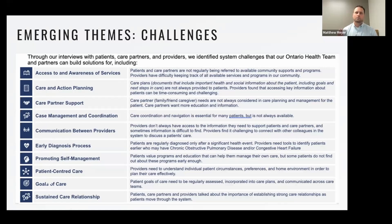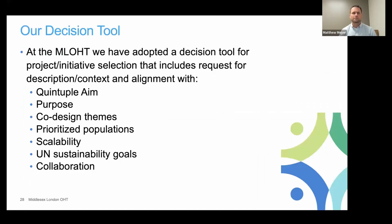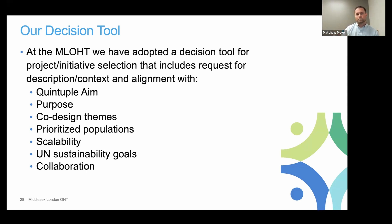What came out of that experience-based co-design are ten areas of focus, which we consistently come back to as part of our decision-making process when considering projects. It's not just about the data — we always come back to how each project is addressing one of these themes. We do this through a decision-making tool that we're happy to share. As we consider a project, we ask: how is it supporting each element of the quintuple aim, is it aligned with our co-design themes, does it support our priority population, and is it scalable?